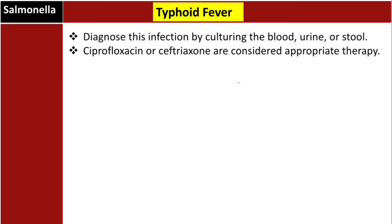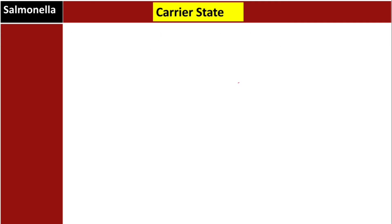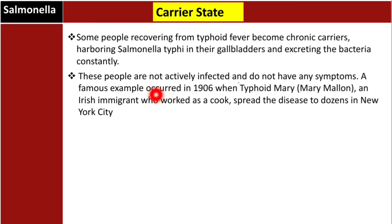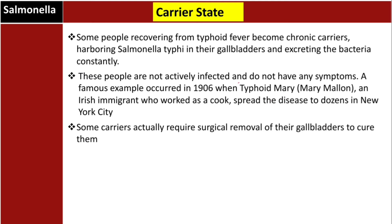Typhoid fever is diagnosed by culture of blood, urine, or stool. Treatment with ciprofloxacin and ceftriaxone is considered appropriate therapy. Some people recovering from typhoid fever become chronic carriers, harboring Salmonella typhi in their gallbladders and constantly excreting the bacteria without symptoms. A famous example is Typhoid Mary — Mary Mallon, an Irish immigrant who worked as a cook and spread the disease to dozens in New York City in 1906. Carriers may require surgical removal of the gallbladder to be cured.